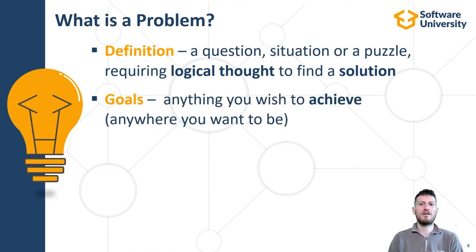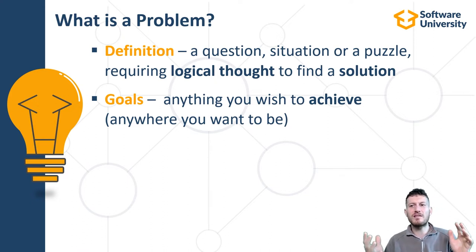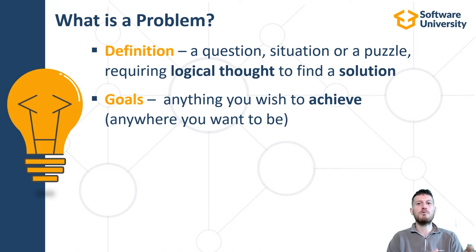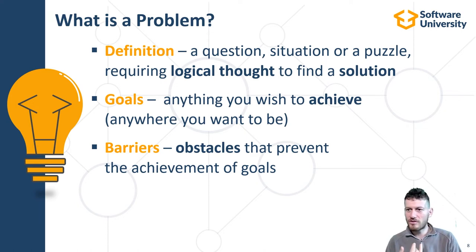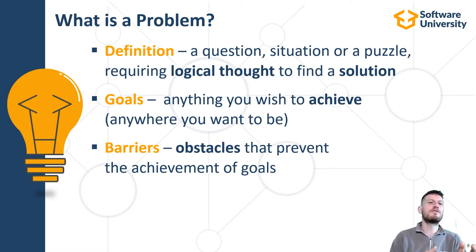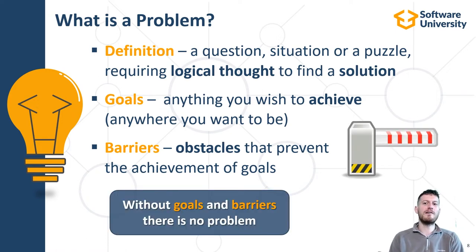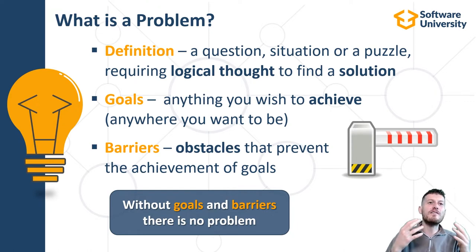Problems have goals — what you wish to achieve, the final situation, product or result. When the goals are achieved, the problem is considered solved. Problems may also have barriers, which are obstacles that prevent the achievement of goals. Barriers might be shortage of resources or absence of knowledge or skills. The solution of the problem describes how to overcome the barriers. Without cause and barriers, there is no problem. The problem is the assignment to achieve, solve, build or calculate something by overcoming the barriers.